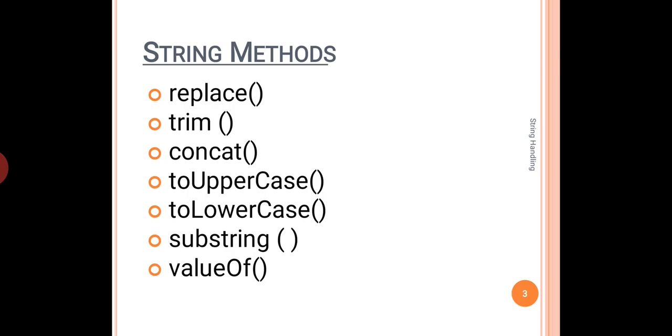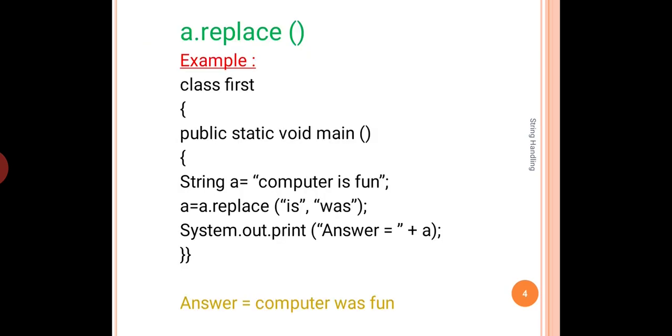Starting off with the first one, that is the replace function. Now replace function is available in two different types of variants. The first one being a string replace, where we can replace a word like 'is' with another word like 'was'. It can be any word and the length of the word or the given set of characters does not matter.